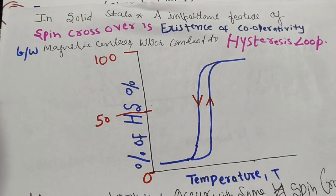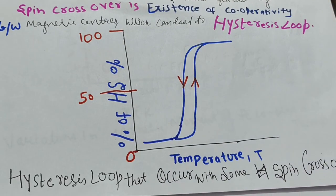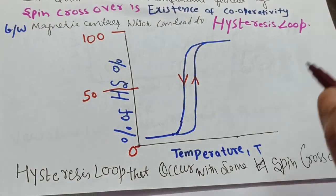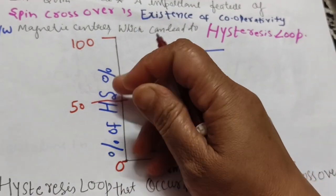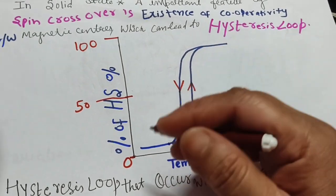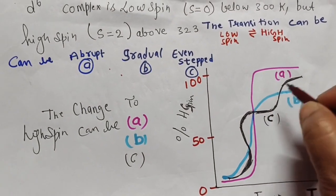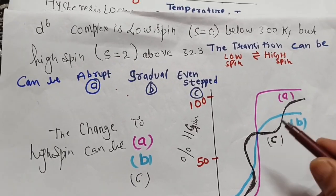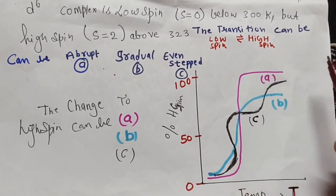In the solid state, an important feature of spin crossover is the existence of cooperativity between magnetic centers, which can lead to a hysteresis loop. A graph plotting the percentage of high spin complexes versus temperature shows this loop. Three types of transitions are observed: (a) abrupt, (b) gradual, and (c) stepped transitions.